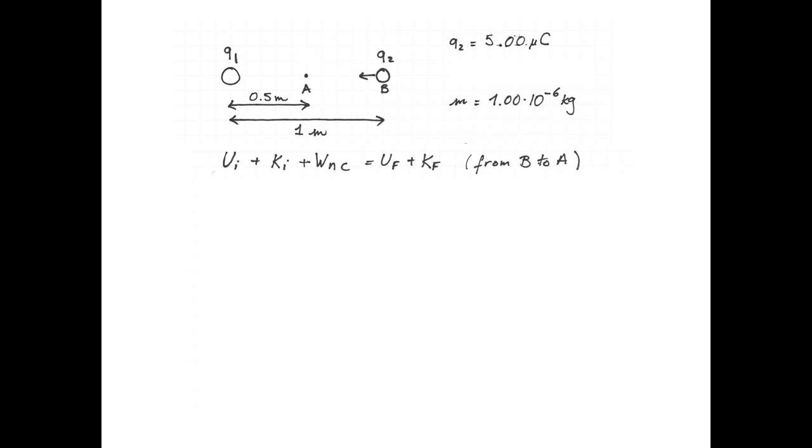Conservation of energy: initial potential energy plus initial kinetic energy plus work done by non-conservative or external forces equals final potential energy plus final kinetic energy. And from A to B, we know almost everything in this equation.